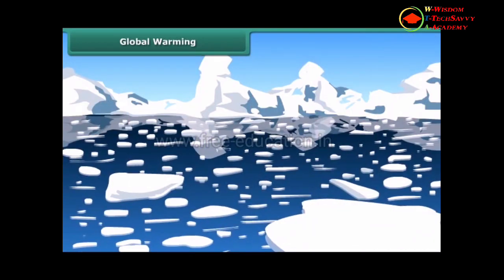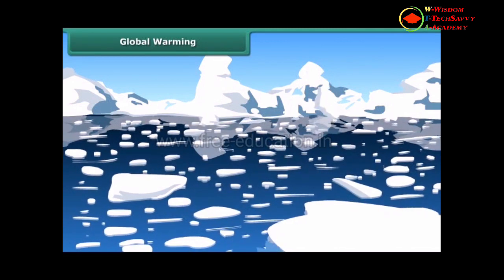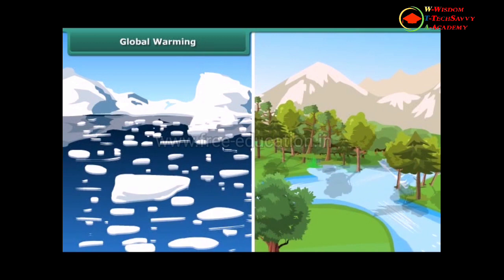Global warming means the Earth is heating up. It will melt the ice at the poles, causing sea levels to rise, which could flood low-lying areas, thus affecting the habitats of plants, animals, and people.